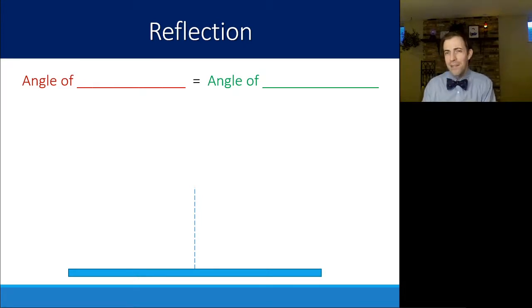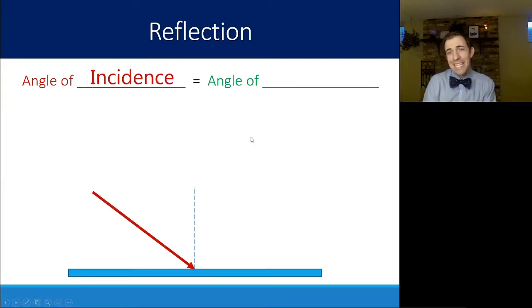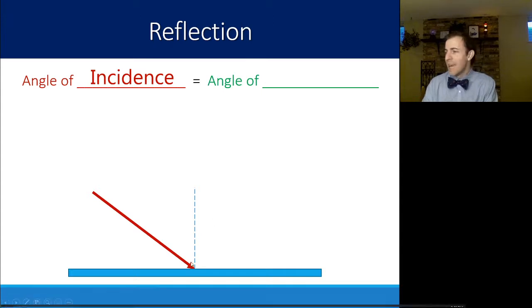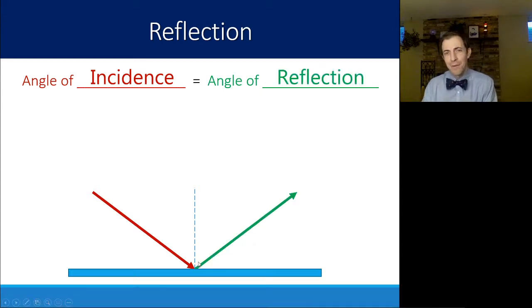Reflection can be quantified through angles relative to how it's bouncing on that surface. So first we will always have an angle of incidence. This is the light that's coming into the surface here, that reflective surface, and we then have an angle of reflection.